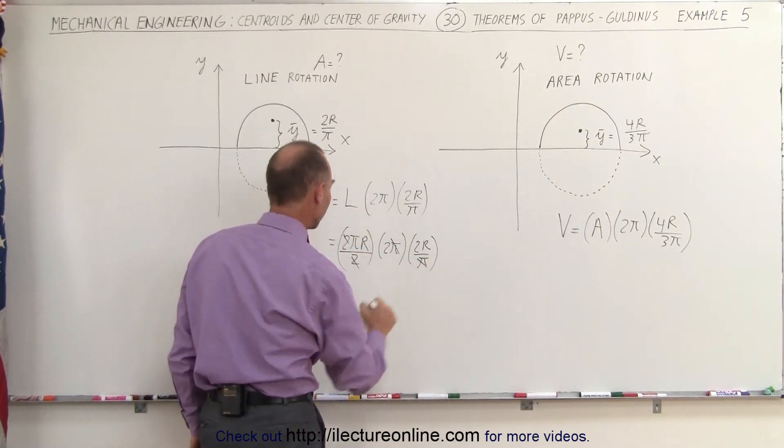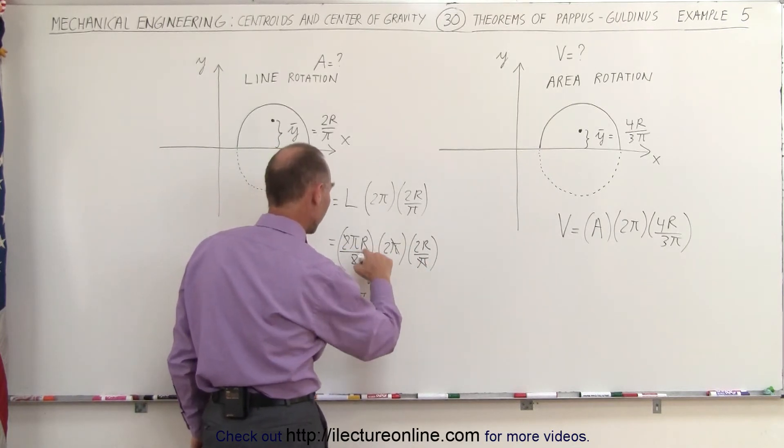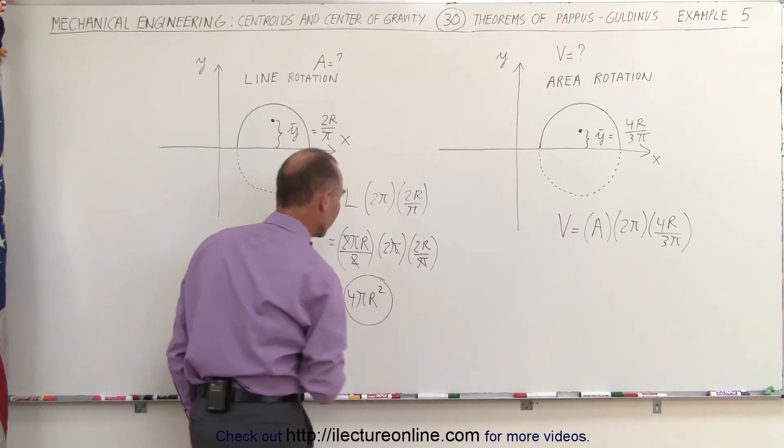This π will cancel out with that π. We end up with 4 times π times r times r, which is r squared. And that is indeed the surface area of the sphere.